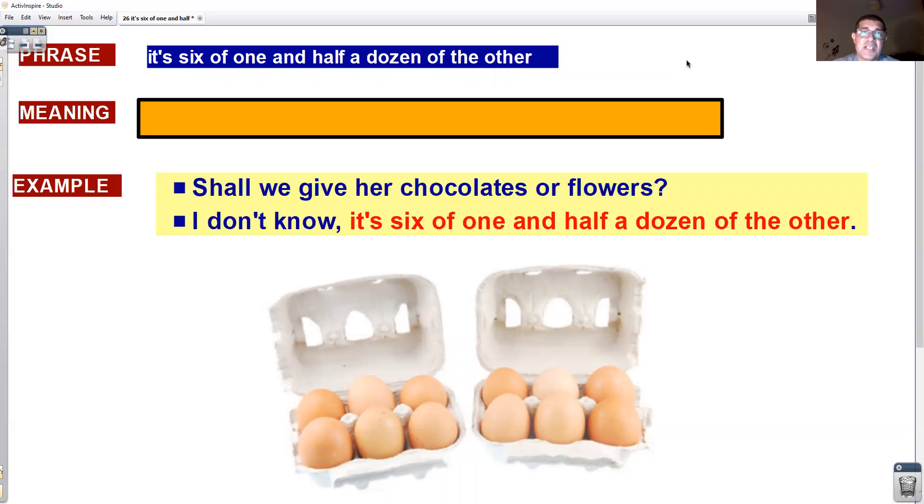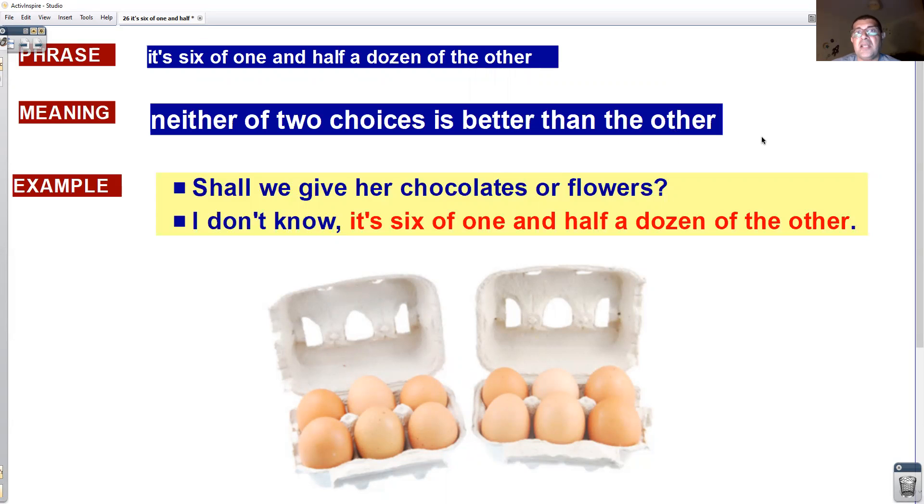If you say something is six of one and half a dozen of the other, you mean it's the same, it doesn't matter, neither of two choices is better than the other.